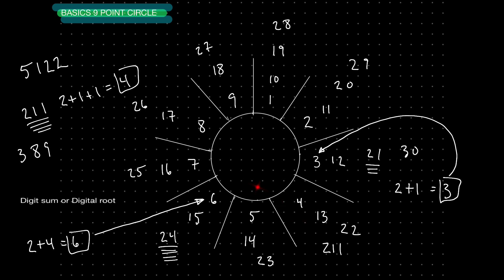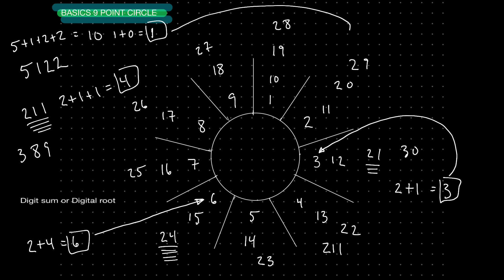If I want to know where the number 5,122 lands, I'm going to add 5 plus 1 plus 2 plus 2. That's 5 plus 1 is 6, plus 2 is 8, plus 2 is 10. So that gives me 10. When I add 1 plus 0, that takes me back to 1. So the number 5,122 is going to be on spoke number 1, with a digital root of 1.